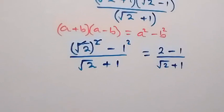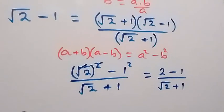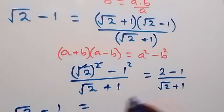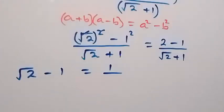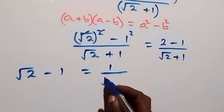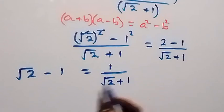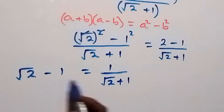So therefore, what we have here, which is root 2 minus 1, is the same thing as 1 over root 2 plus 1. So we can write root 2 minus 1 as 1 over root 2 plus 1.